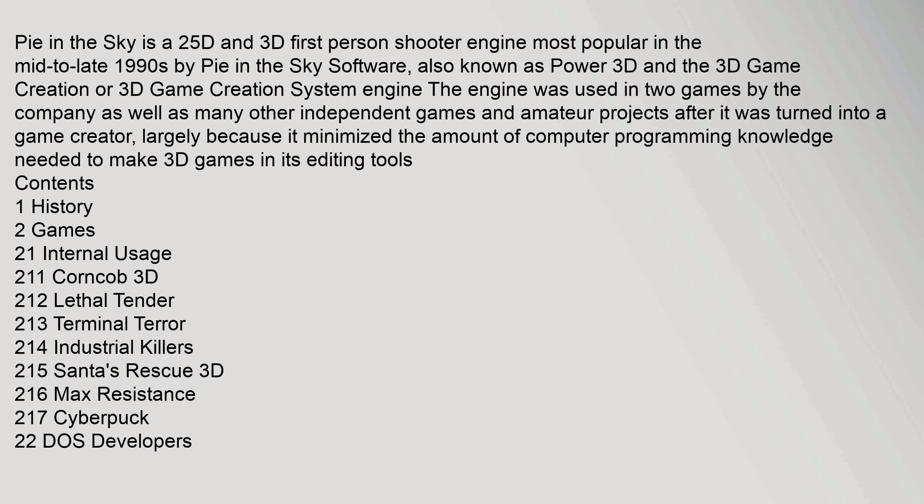Pi in the Sky is a 2.5D and 3D first-person shooter engine most popular in the mid to late 1990s by Pi in the Sky Software, also known as Power 3D and the 3D Game Creation or 3D Game Creation System engine. The engine was used in two games by the company as well as many other independent games and amateur projects after it was turned into a game creator, largely because it minimized the amount of computer programming knowledge needed to make 3D games in its editing tools.